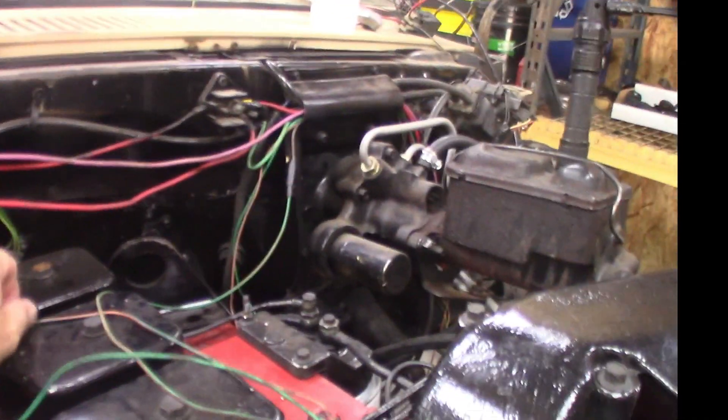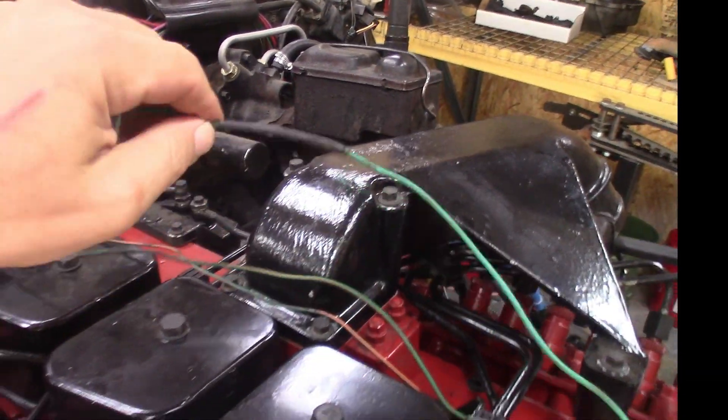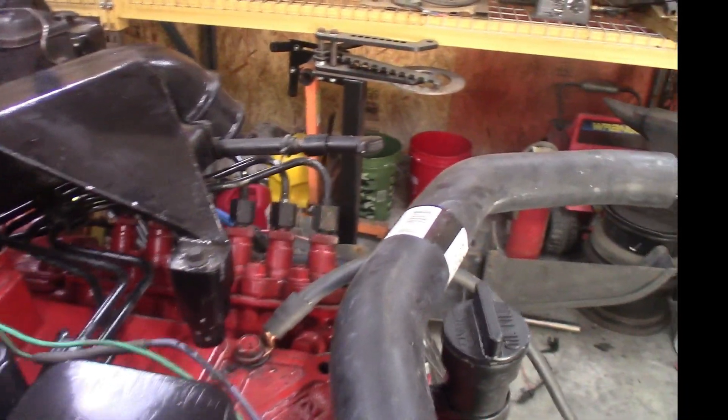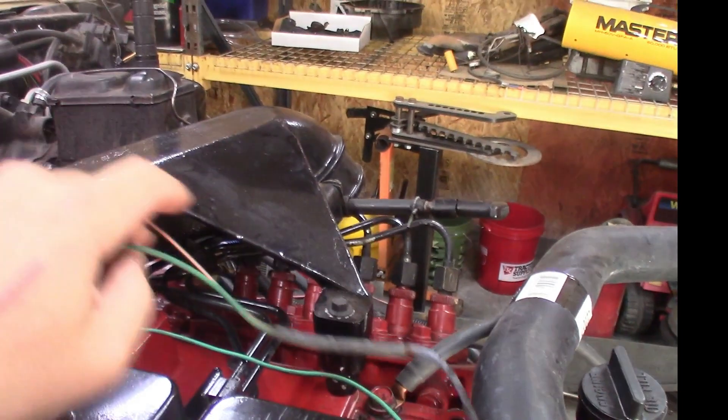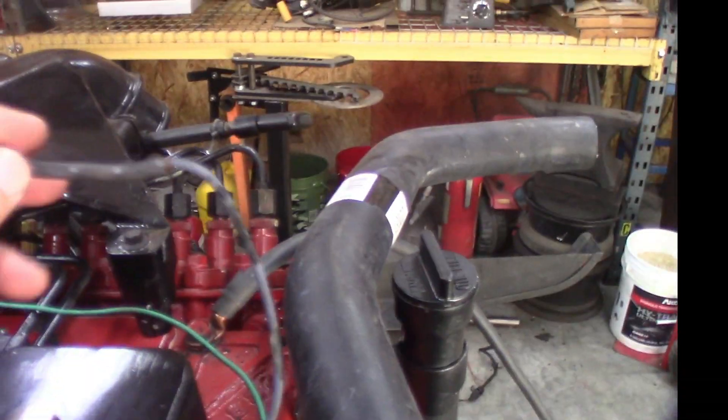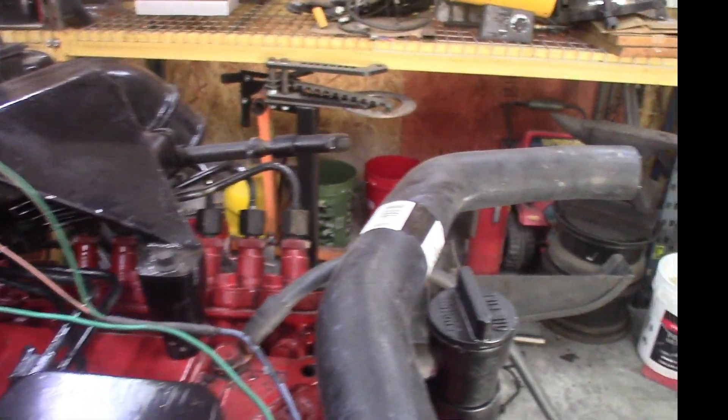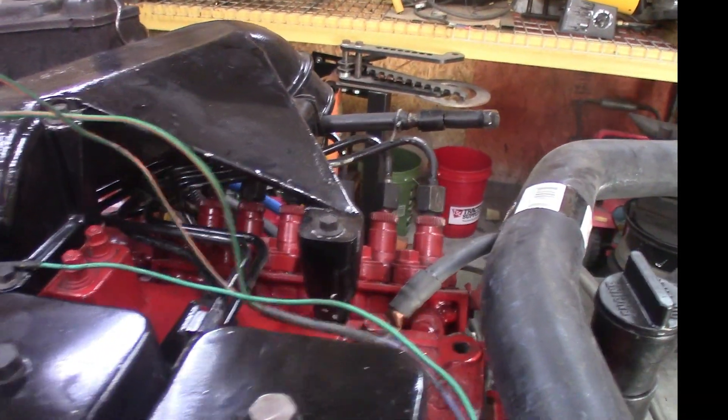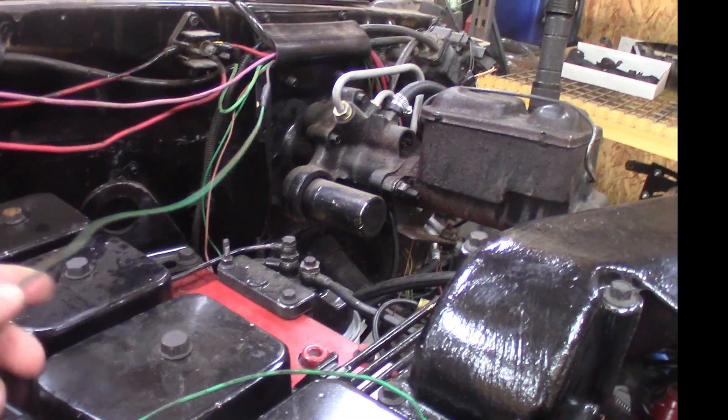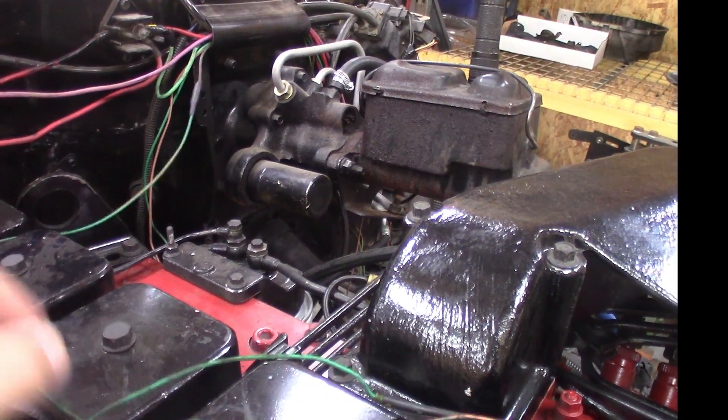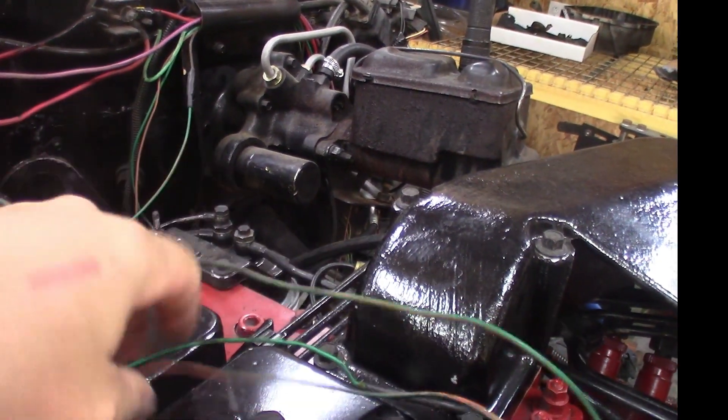The blue wire you can see goes to that top post on the regulator. And your Dodge harness, that's the green wire. Your Dodge harness is already split off with a factory solder connection heat shrink, so that saves you some time there. This wire goes to the regulator like I said.